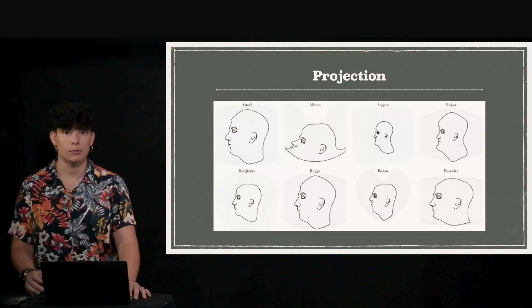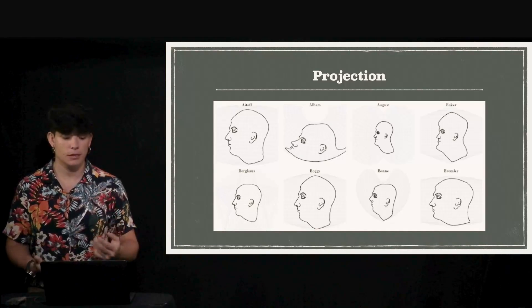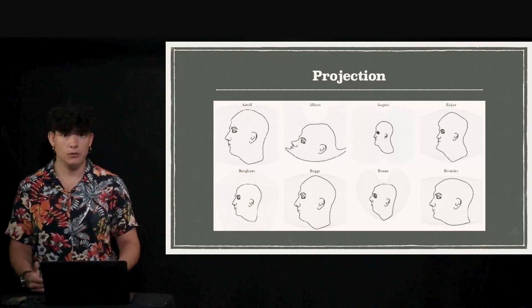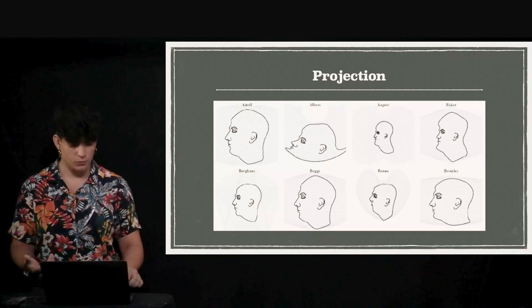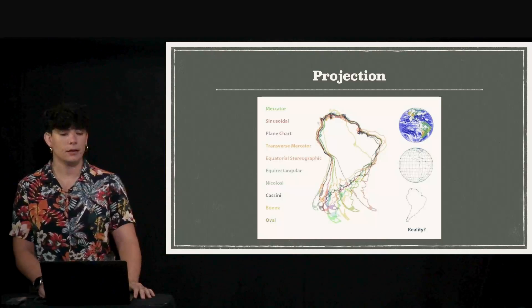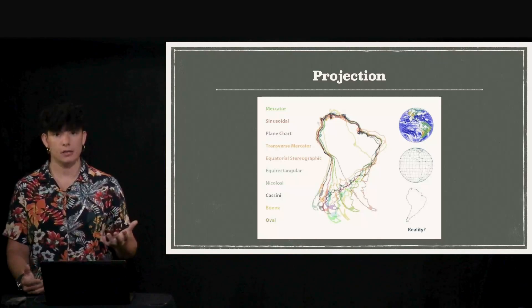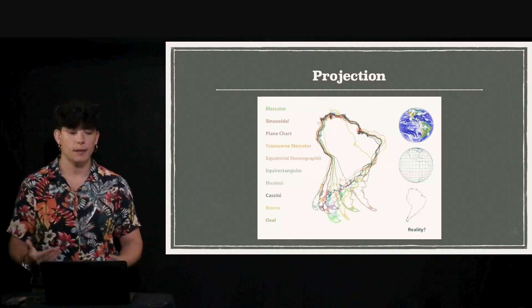This is something we have to take into account because if we want to merge or extract information from different maps, they may be in different projections. Here you see South America and how its shape can change depending on the projection we are using.